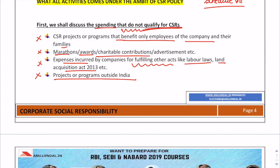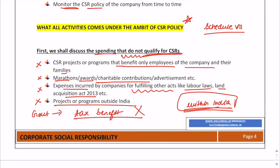All CSR activities under Section 135 of the Companies Act must relate to activities within India. Also noteworthy: the government does not offer tax benefit to any CSR activity undertaken by corporate, because it would act just like giving a subsidy. However, there is an exception — if a company contributes to the Prime Minister's National Relief Fund, it receives 100 percent tax benefit under Section 80G of the Income Tax Act.